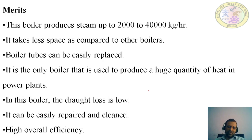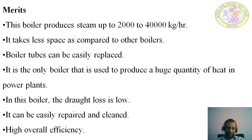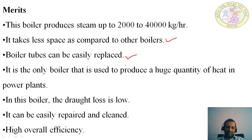Now the merits of the Babcock and Wilcox boiler: this boiler produces steam up to 2,000 to 40,000 kg per hour. It takes less space compared to other boilers — the installation space required is small. The boiler tubes can be easily replaced because two doors are provided, through which a person can enter the boiler and replace the tubes.